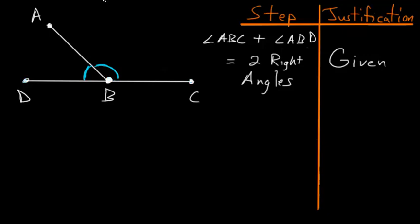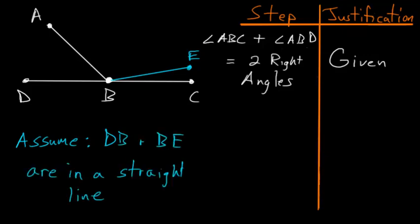To start this proof, let's make the assumption that DB and BC are not in a straight line and that DB is actually in a straight line with some other line which we can call BE. So let's write down that we're going to assume that DB and BE are in a straight line, and our goal is to essentially show that this assumption leads to some type of logical contradiction.